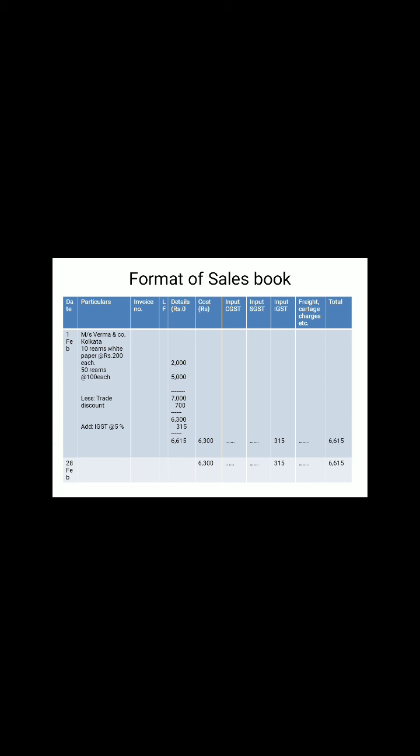Now this is the format of the sales book. The first column is the date. The particulars column lists the name of the customer. The items purchased by the customer are to be listed, along with details similar to the purchase book. For example, Vermaend Company is the name of the customer, Kolkata is the place, and you give details of items sold to them.